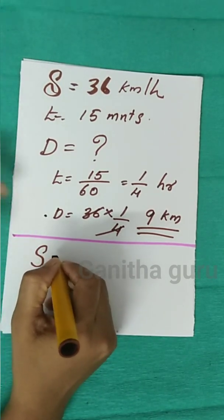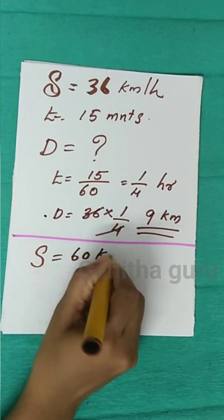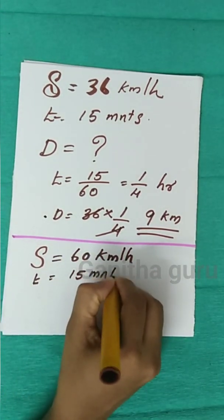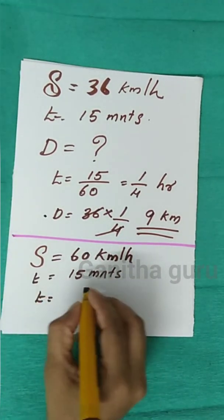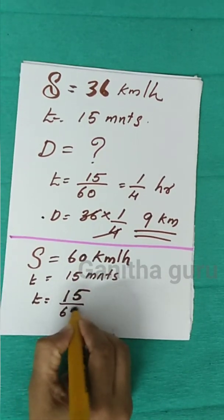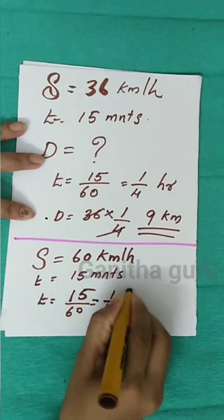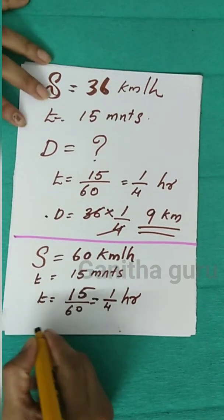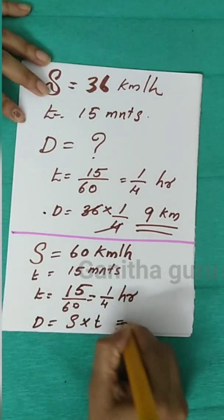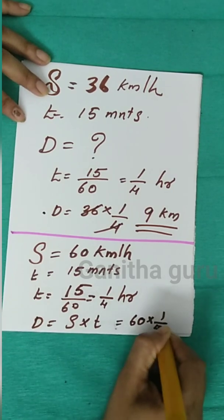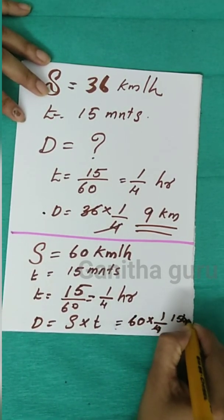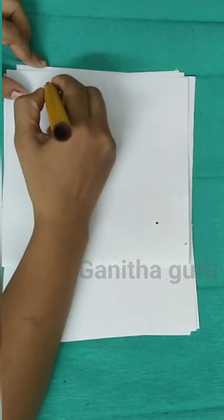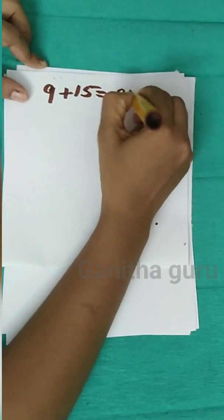The speed for the second part is 60 km per hour and the time is 15 minutes, which is 1 by 4 hours. Distance equals speed into time: 60 into 1 by 4 gives 15 km. Total distance is 9 plus 15, which equals 24 km.